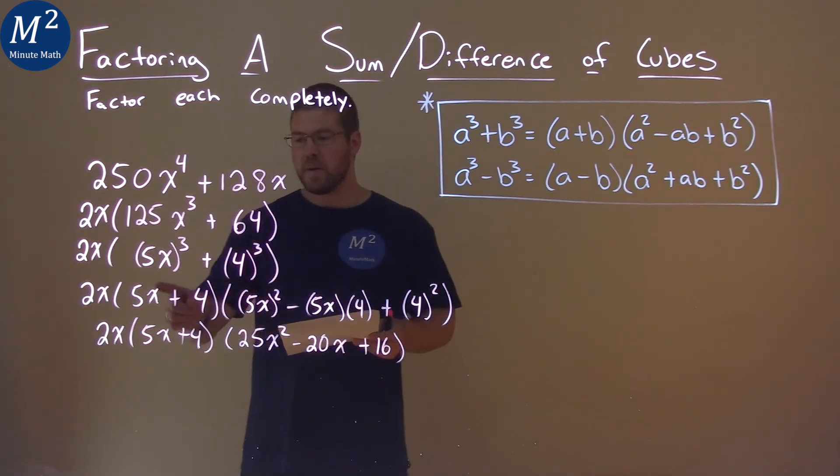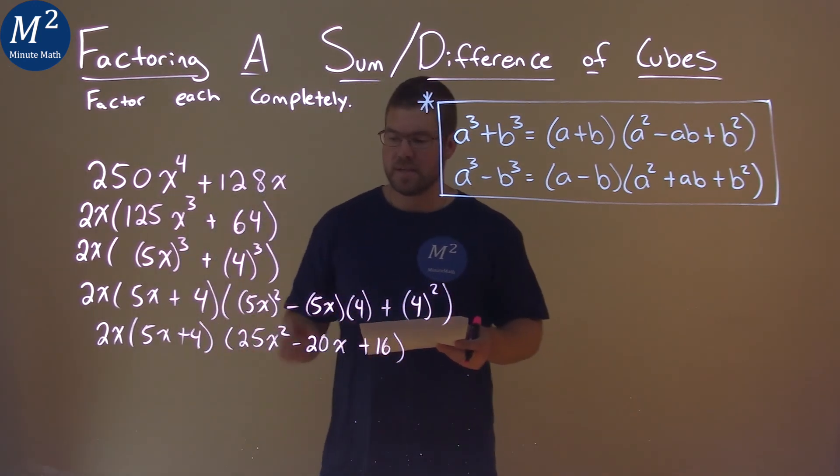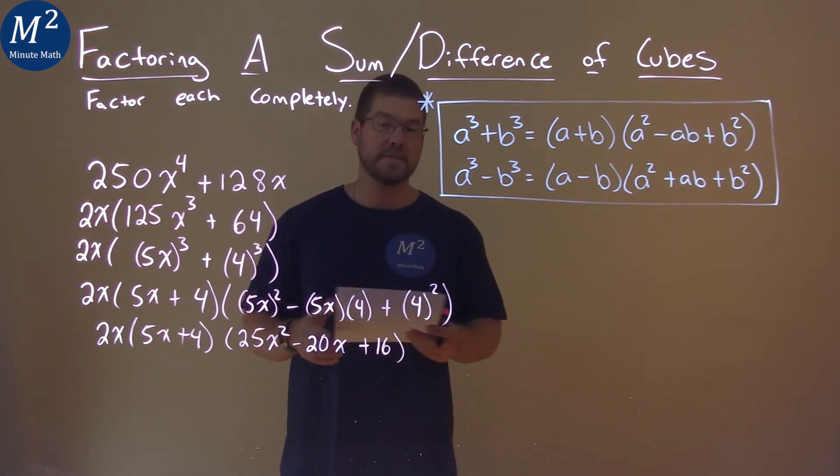And so our final answer is 2x times 5x plus 4 times 25x squared minus 20x plus 16.